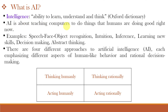AI is about teaching computers to do things that humans do. For example, speech recognition, face recognition, object recognition, intuition, inference, learning new skills, decision making, abstract thinking, and more. There can be four different approaches or paths to Artificial Intelligence, and each of these paths emphasizes different aspects of human-like behavior or rational behavior.